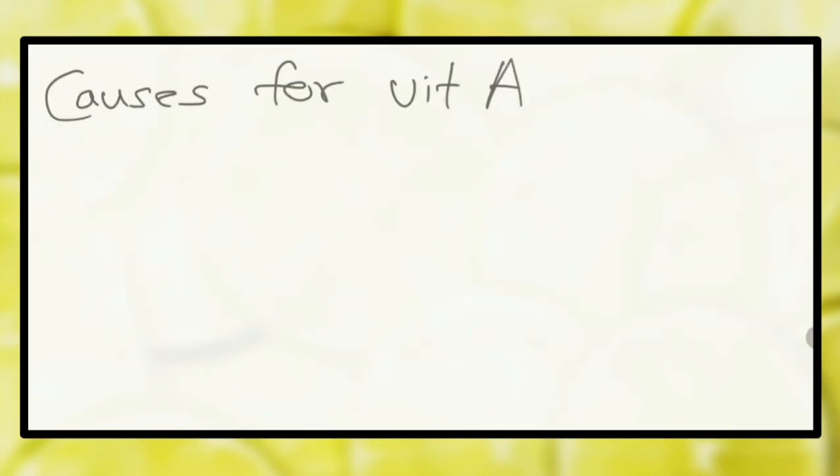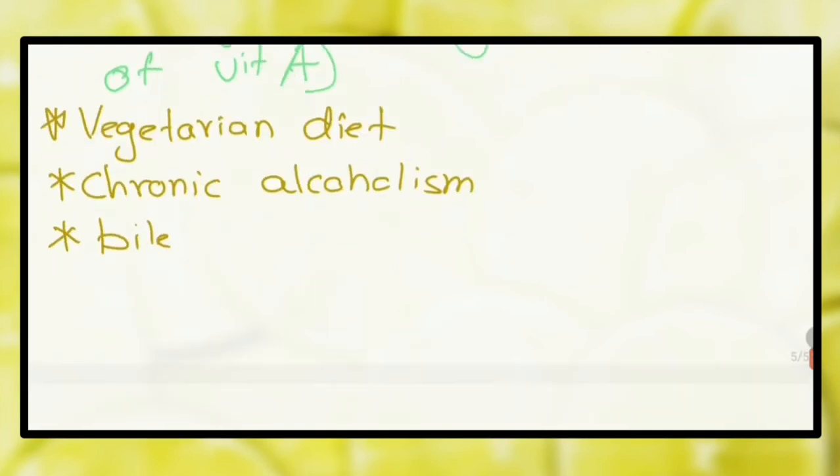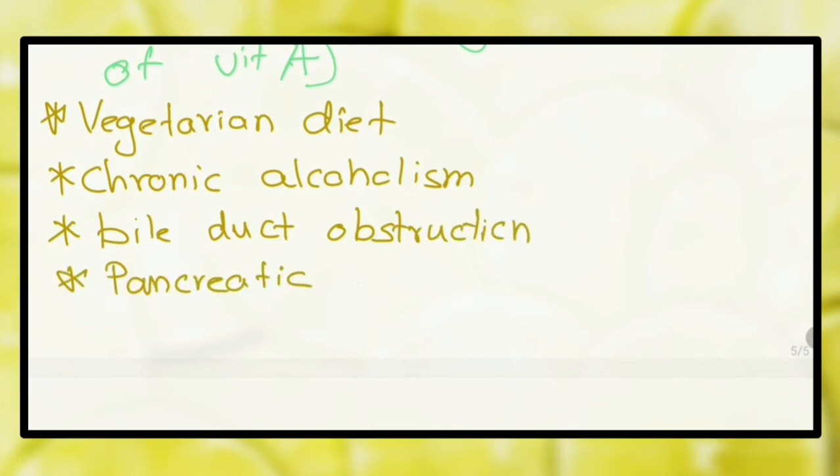What are the causes for vitamin A deficiency? May be due to vegetarian diet, chronic alcoholism, bile duct obstruction, pancreatic insufficiency, chronic diarrhea. Does it have a toxic effect in excessive intake? Yes.